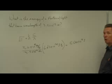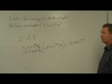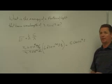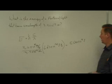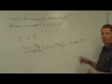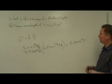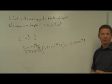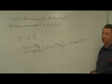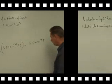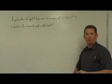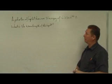That's a small amount, but the previous problem gave 10 to the negative 25 joules — this is a much higher energy, which is to be expected because this photon was actually located in the x-ray region of the spectrum. Let's try another problem.